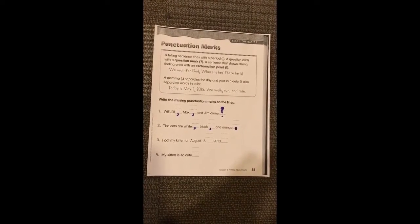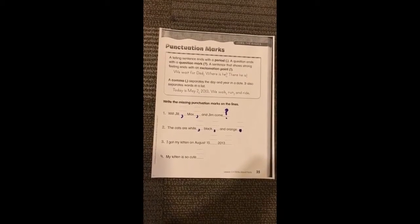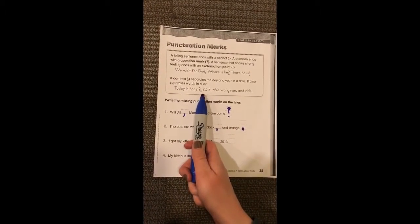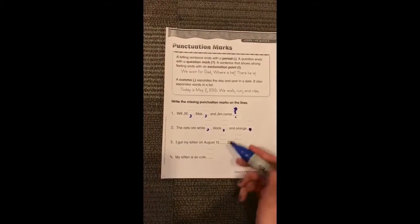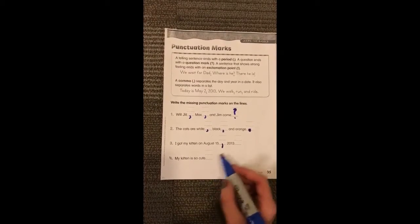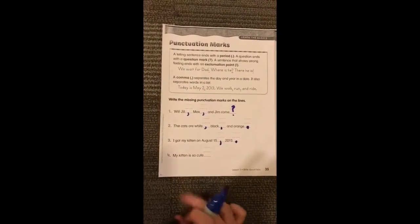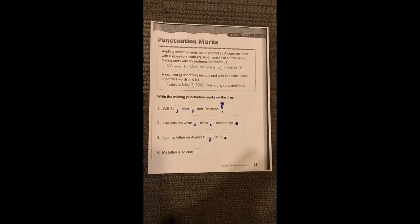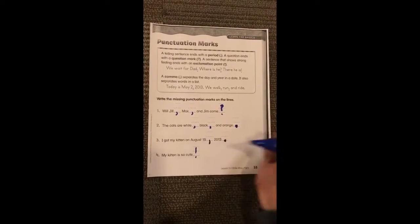Number three: I got my kitten on August 15th, 2013. When I look at the rule, it says a comma separates the day and the year in a date. So after August 15th, I'm going to put a comma. And this is just telling me when this person got their cat, so I'm putting a period. And the last one: My kitten is so cute! That's something I would say very excitedly, so it gets an exclamation point.